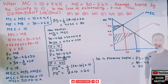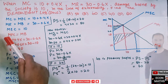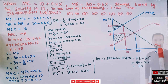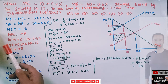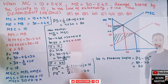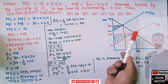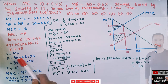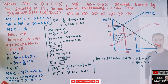Damage borne by the society means our marginal external cost is equal to 10. We equated our marginal private cost with our marginal benefit curve — when demand and supply intersect, we got output X equal to 20 and price P equal to 30 minus 0.6 times 20, which gives equilibrium price of 18.